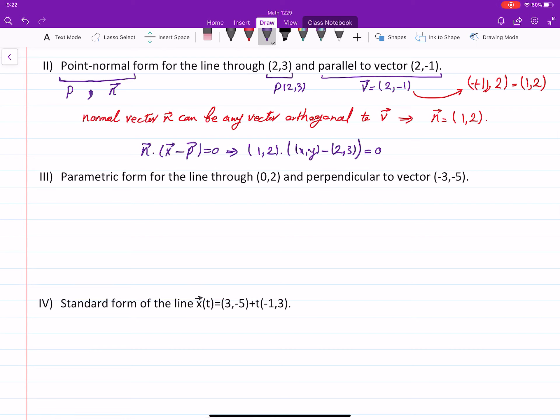Okay, for the third part, we're looking for parametric form. You have to know these requirements. For parametric form, we need a point and we need a vector, parallel vector. Here, the point is okay, nice, it is given.